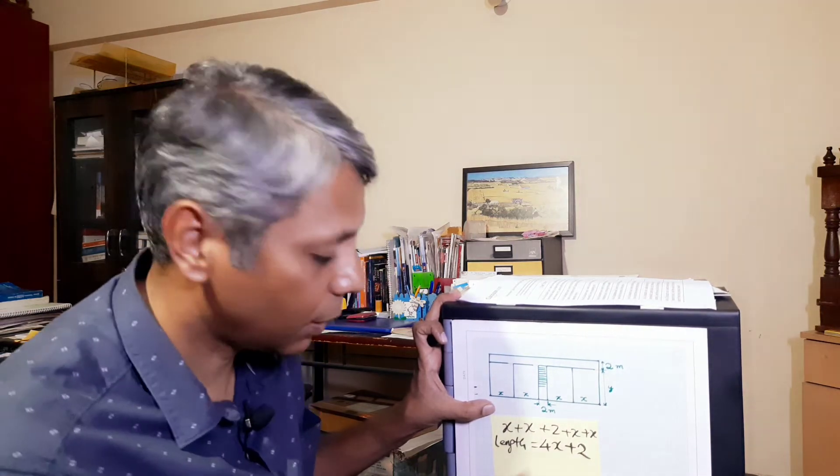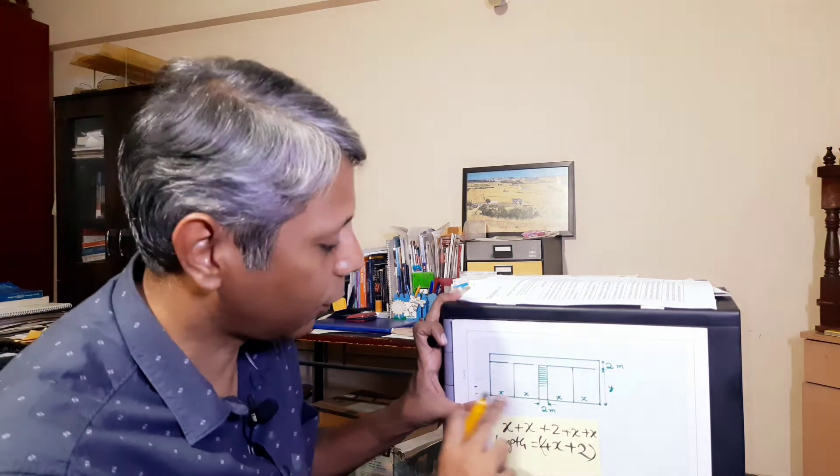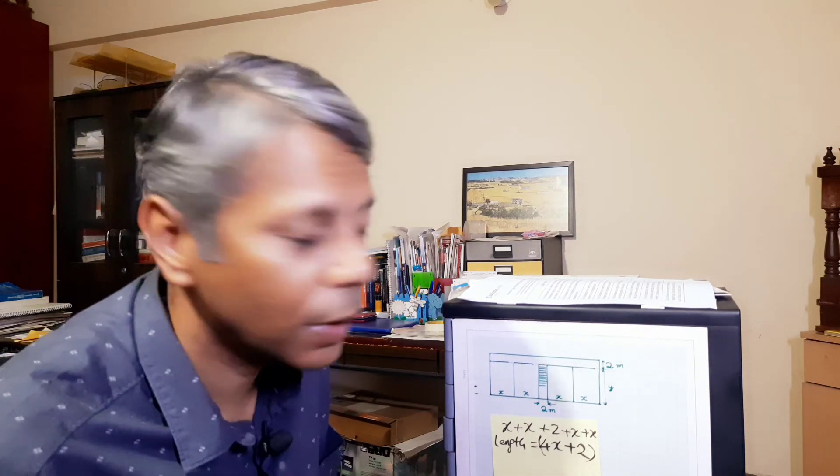4x plus 2 meters. This entire thing. 4x plus 2 meters. What's the width of the classroom? x meters. We don't know what x is. Right now maybe we don't bother about it.